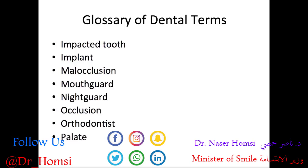Malocclusion is when the upper and lower teeth aren't lined up well in order to bite and chew properly. A mouth guard is a removable device worn over the teeth to protect them from damage during sports. A night guard is similar — also a removable device worn over the teeth but at night to protect from damage due to bruxism. Occlusion refers more generally to the contact between the upper and lower teeth and how they contact to bite and chew. An orthodontist is another ADA specialty — a type of dentist who works to correct the position of teeth with braces and other instruments.